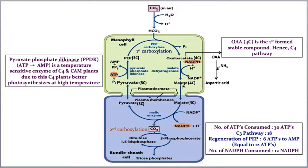Up to malate formation, all reactions occur in the mesophyll cell. Malate, a 4-carbon compound, then enters the bundle sheath cells. There, it releases hydrogen and 1 carbon dioxide, leaving a 3-carbon compound called pyruvic acid, or pyruvate.